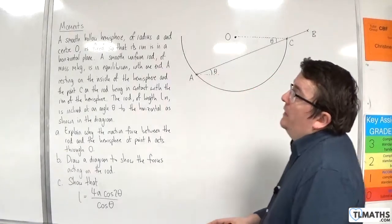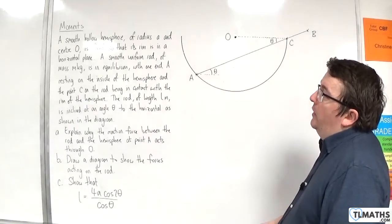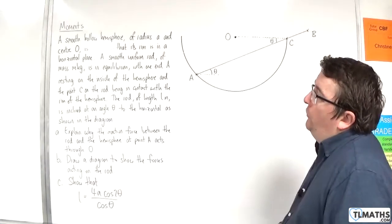So in this problem, we have a smooth hollow hemisphere of radius A and center O is fixed so that its rim is in a horizontal plane.